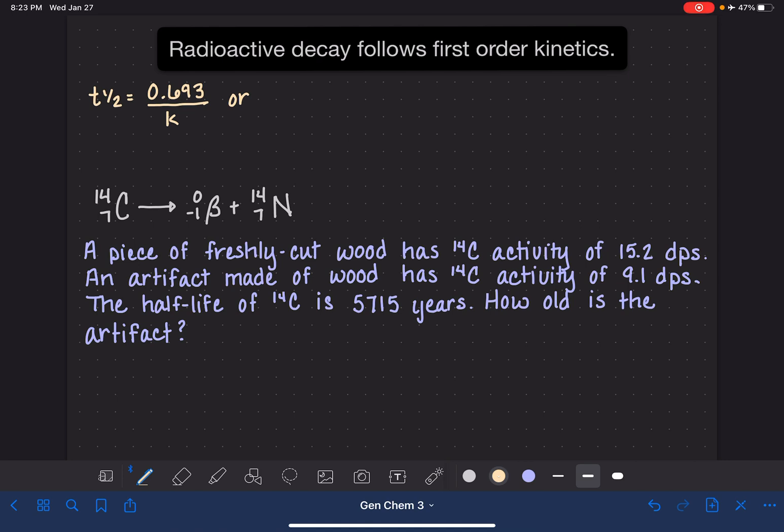So that would be k, rearranging this equation, it would be k equals 0.693 over the half-life. And that's typically how we'll use this equation in a radioactive decay situation. Typically, we know the half-life, and so we're using this equation to calculate the rate constant, k.